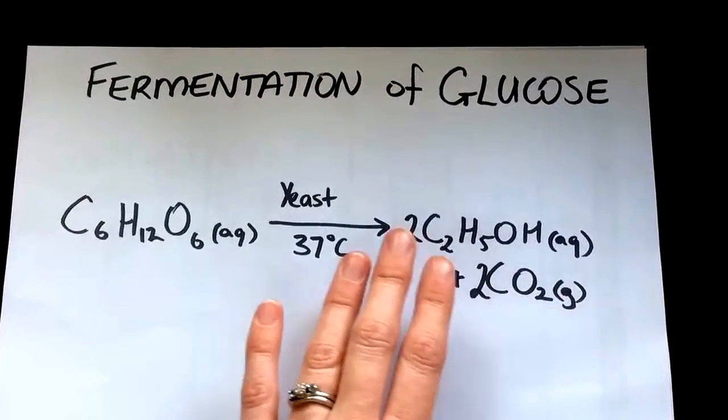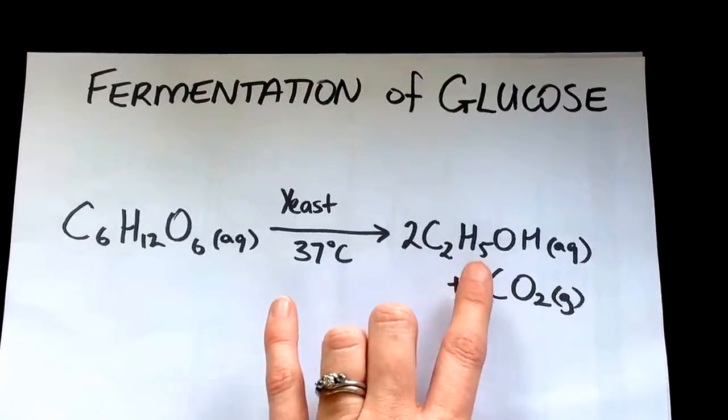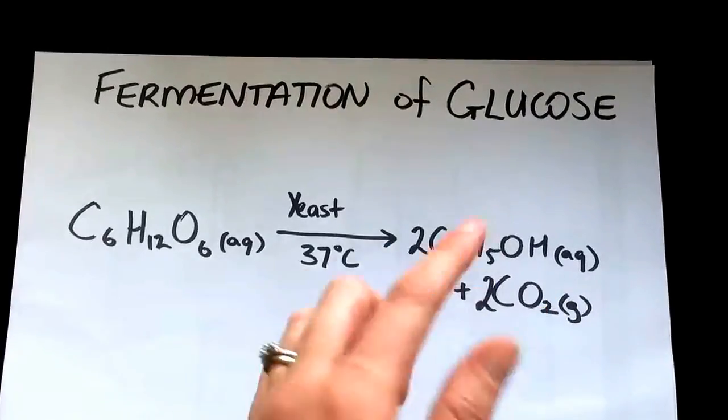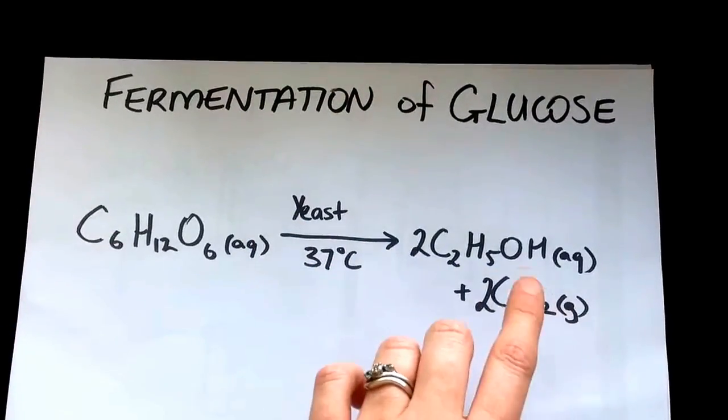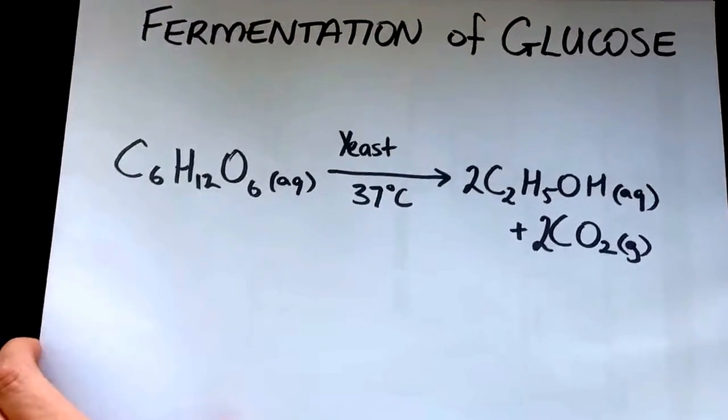If you check here, you've got four carbons plus two carbons are six. You have 10 hydrogen, 12 hydrogen, there's your 12. And you have your two oxygen here and your four oxygen there, so there's six. So we've got a nice balanced equation there.